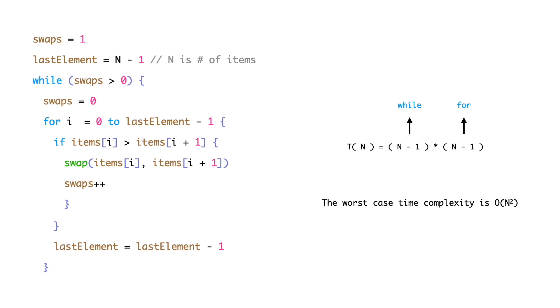Because in every iteration, there will be at least one swap. And the internal for loop also executes for n-1 times. Therefore, the worst case time complexity is n square.